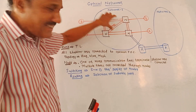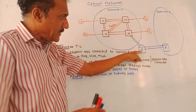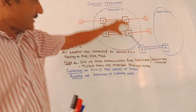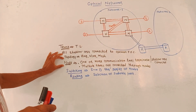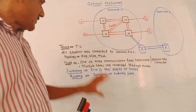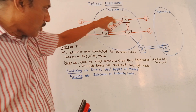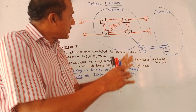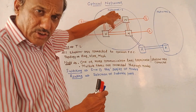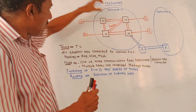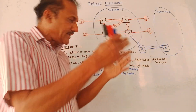Different topologies such as ring, star, and mesh connect all stations using a single or common fiber optic cable — that is the function of the trunk. R represents the router, which is also connected in the network. N stands for the node; one or more communication lines terminate at the nodes, and transmitting as well as receiving stations are connected to the node.